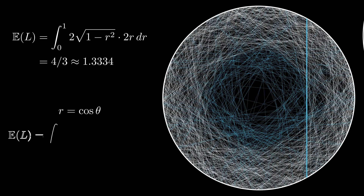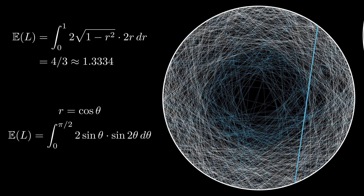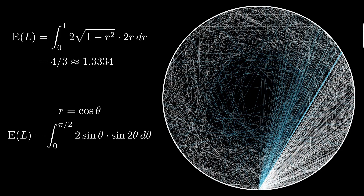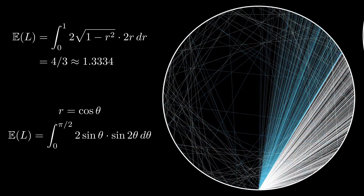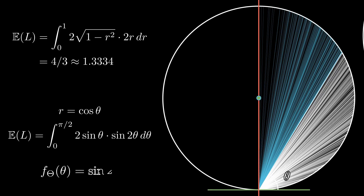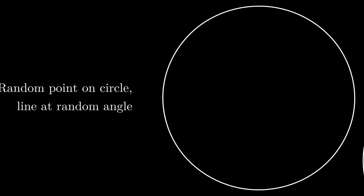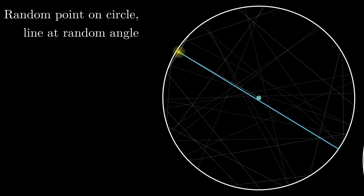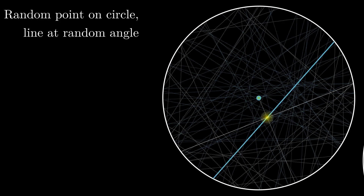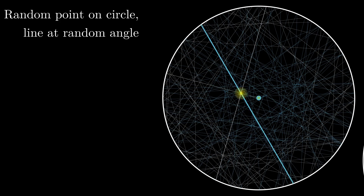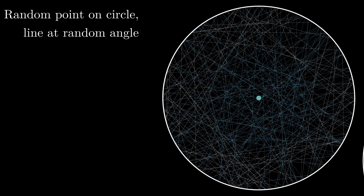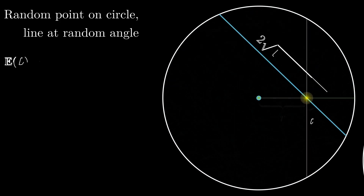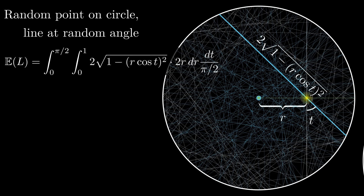Like in the previous case, we can again make a substitution of r = cos θ, which shows us that the density function of θ is sin(2θ). But Numberphile also made a video with Ben Sparks on a related topic, where two other methods of drawing a random chord were discussed. In this method, we choose a random point in a circle and draw a line at a random angle through this point to create a chord. There are two random quantities involved here: the distance of the point chosen from the center and the random angle.